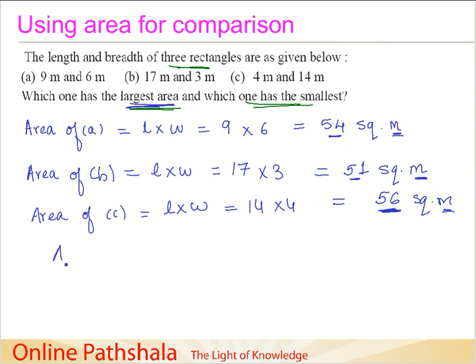Therefore we can say that area of rectangle C is largest. And which one is the smallest amongst these areas? It is B. Therefore we can say that area of rectangle B is smallest. This is a practical example where we just calculated area and found out which one is largest and smallest, so we are using the area for comparison.